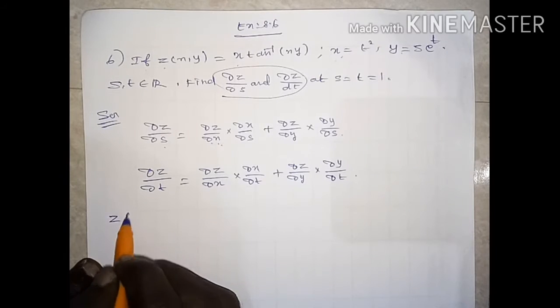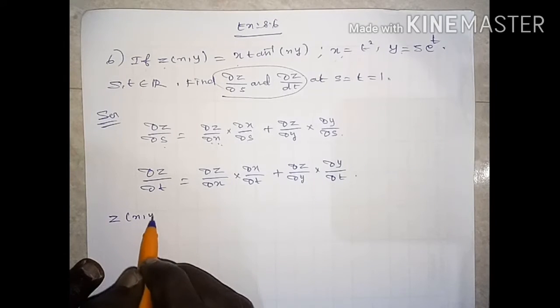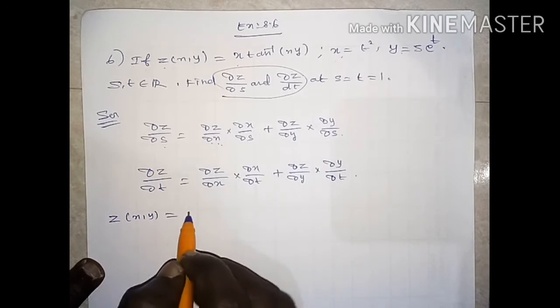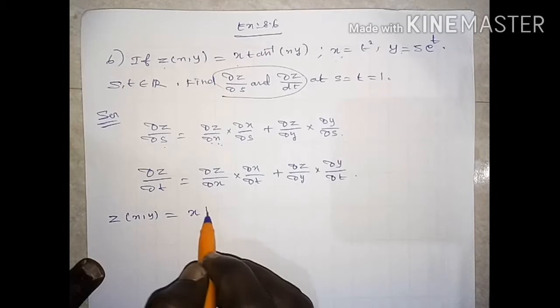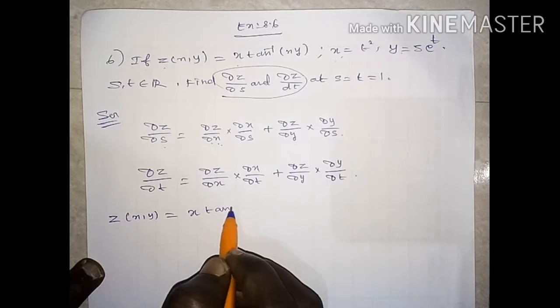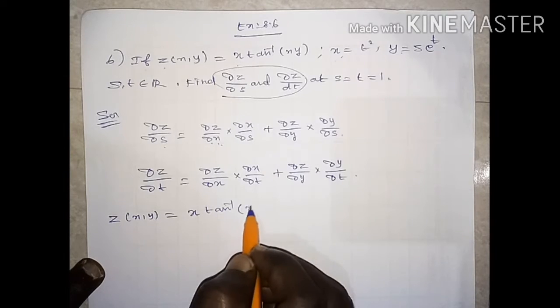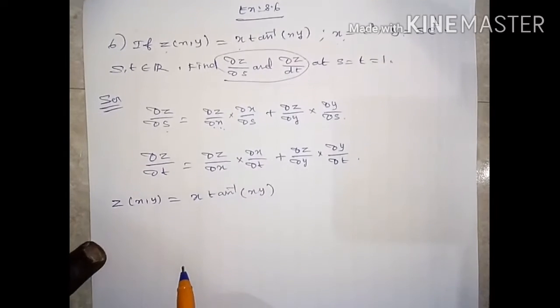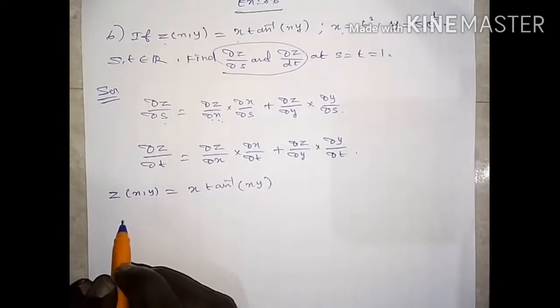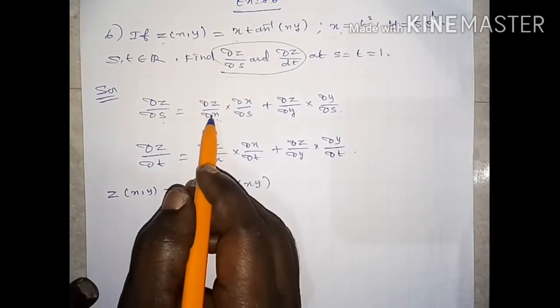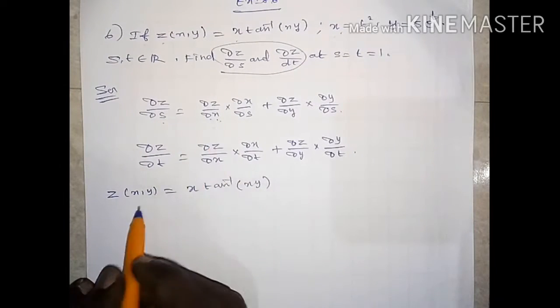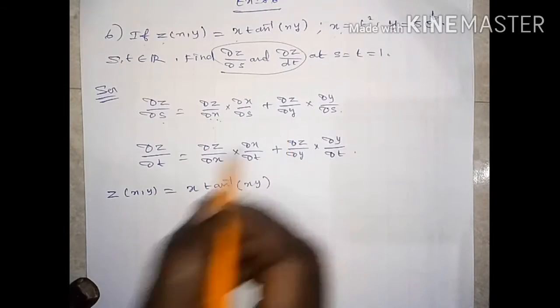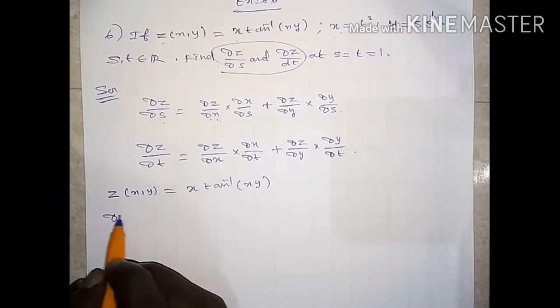z is given: z of x, y equal to x times tan inverse of xy. First, we have to find dou z by dou x and dou z by dou y.